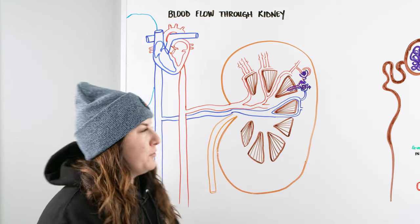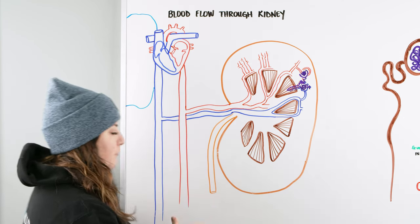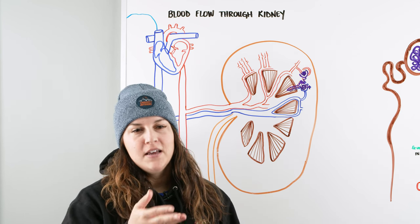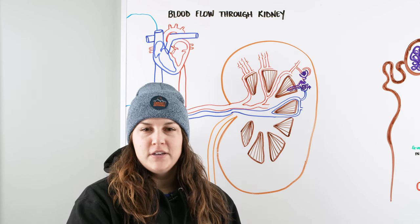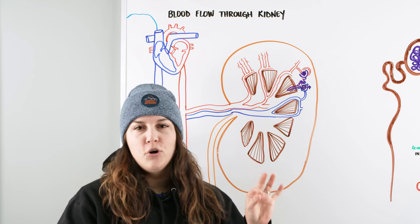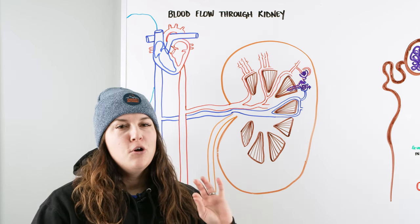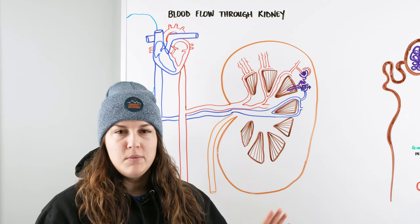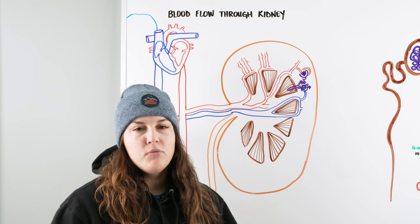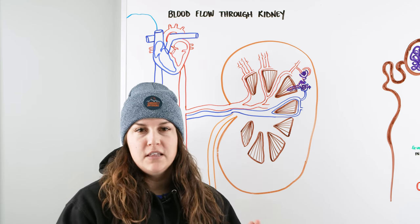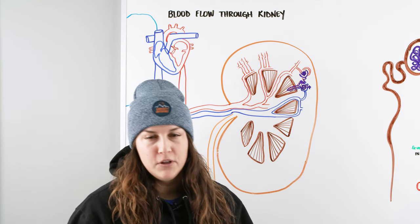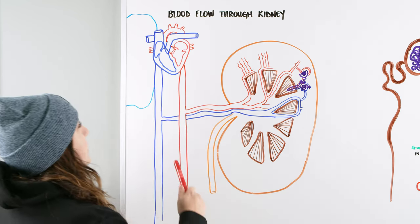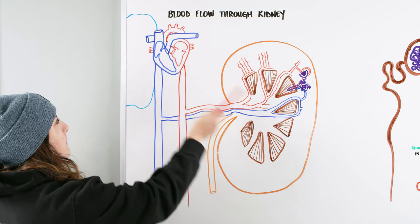With blood flow through the kidney, it's important to understand this because being able to trace a drop of blood from the heart to the kidney — or the heart to the tip of your toe or your brain — helps us understand those vessels and where there could be potential breakdown or interruption of blood flow. This is going to be a quick video going over how we get from the heart to the kidney and back.